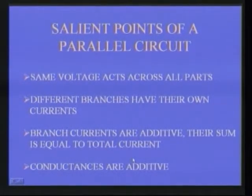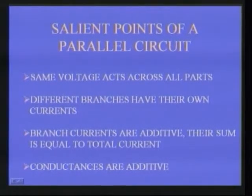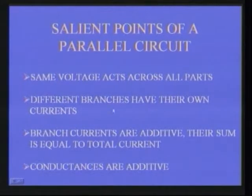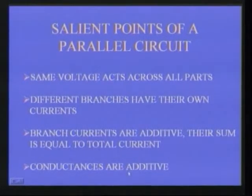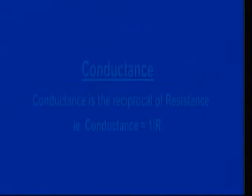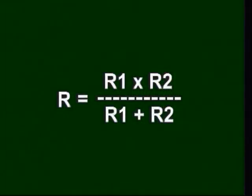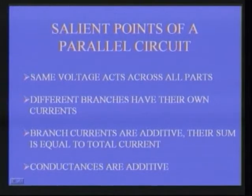The important features of a parallel circuit are: the same voltage acts across all branches; different branches have their own currents — lower resistance allows more current, higher resistance allows less; branch currents are additive and their sum equals the total current from the battery; conductances are additive (1/R = 1/R1 + 1/R2); and powers are also additive, same as in a series circuit.